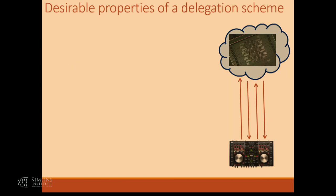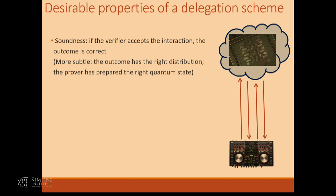To be a little more formal: we're going to be thinking about interactive protocols between a classical being and a quantum computer, where the classical entity is interested in determining the outcome of a certain quantum computation represented by a circuit. Here are the properties we'd like. The most important one is soundness — at the end of the interaction, as long as the verifier accepts, the outcome it records is the correct outcome. There's no way for the machine to convince the verifier of a wrong outcome, even though it's more powerful than the verifier.